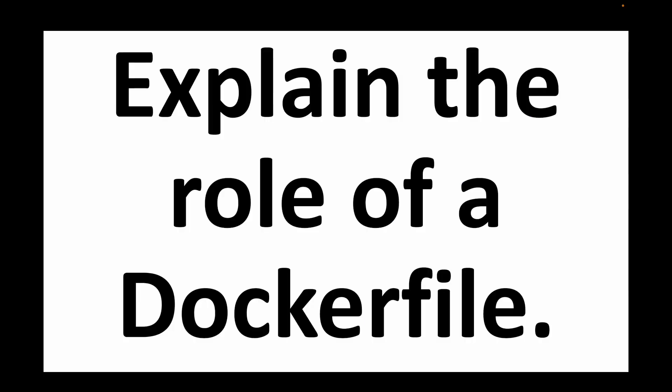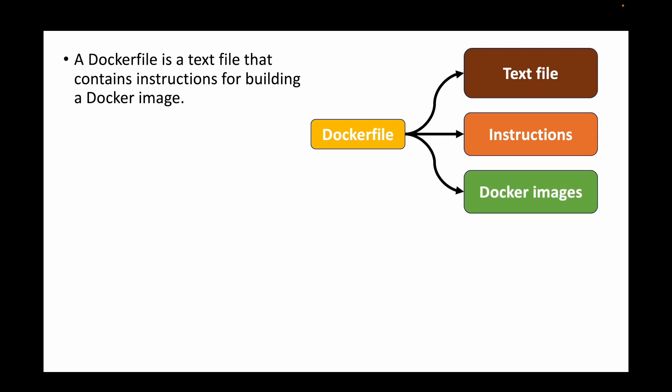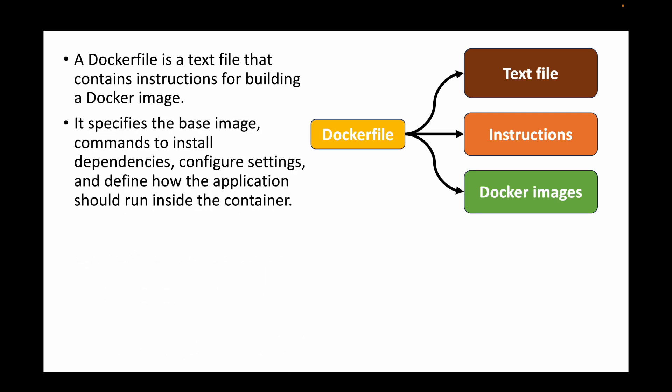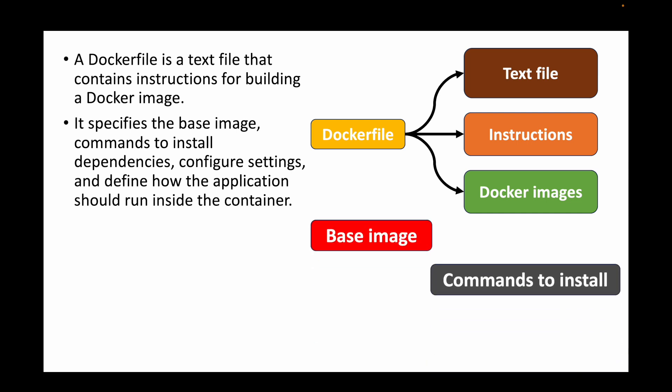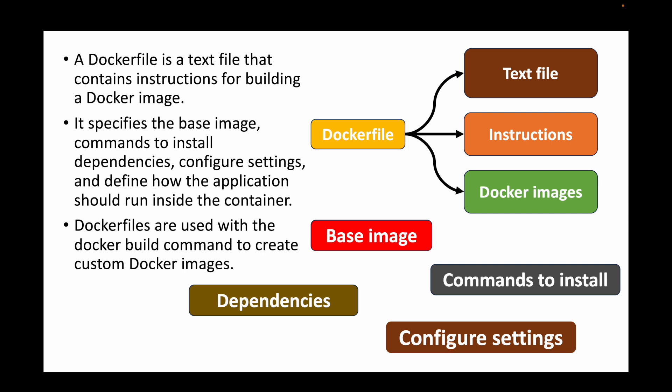The next question is: explain the role of a Dockerfile. The Dockerfile is a text file where we pass all our instructions for building a Docker image. Whenever you want to build a custom image, you put all the instructions in the Dockerfile, and when you build it, it produces the Docker image. It can contain instructions like the base image, commands to install, dependencies, configuration settings, and how the application should run inside the container. Dockerfiles are used with the docker build command to create your custom Docker image.